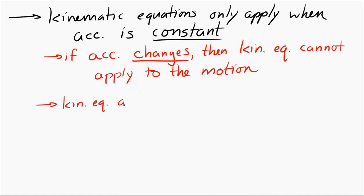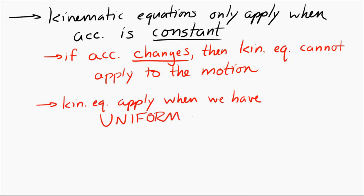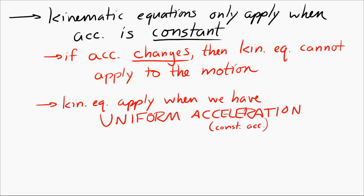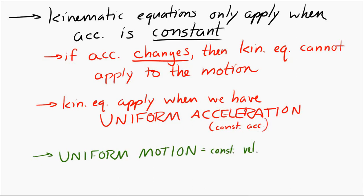Another way to say this is that the equations only apply when you have uniform acceleration. Uniform acceleration means that the acceleration is constant. Be careful — that's different from uniform motion. Uniform motion means that velocity is constant; uniform acceleration means that the acceleration is constant.